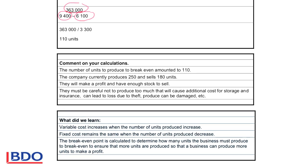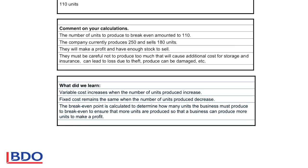If we look at their calculations, the company currently produced 250 units, but they only sold 180. They will make a profit because they are producing 250 and the break even point is only 110.